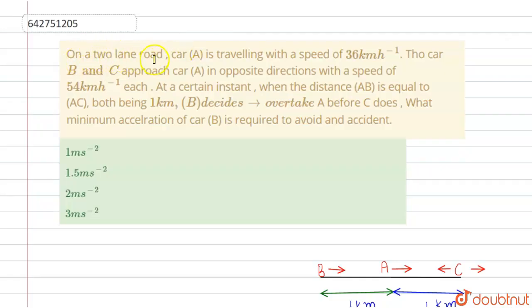On a two-lane road, car A is traveling with a speed of 36 km/hr. Cars B and C approach car A in opposite directions with speeds of 54 km/hr each. At a certain instant, when distances AB and AC are both equal to 1 km, B decides to overtake A before C does. What minimum acceleration of car B is required to avoid an accident?